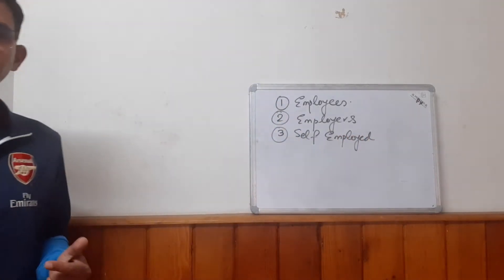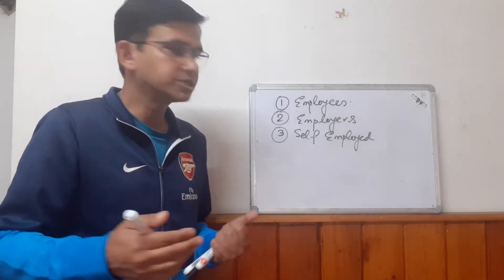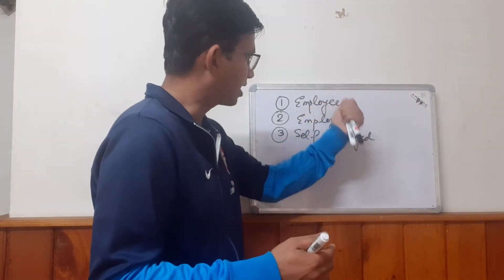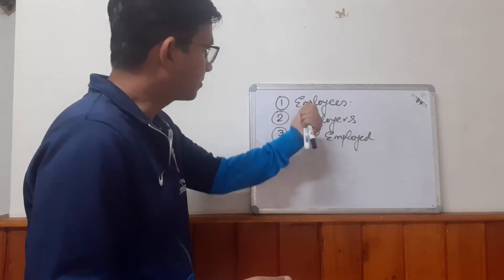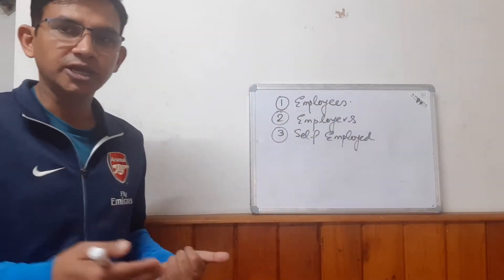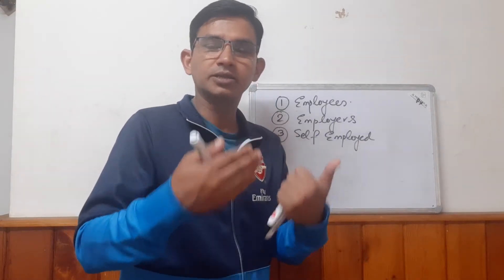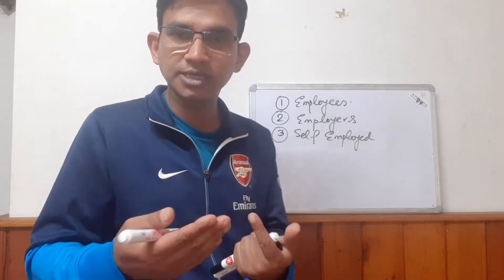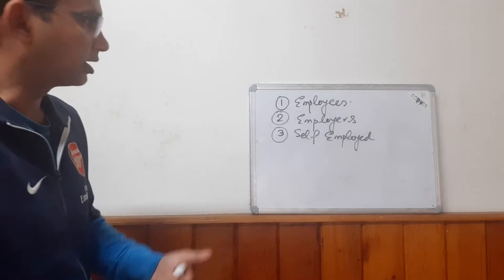When calculating or estimating national income, we identify all the employees and employers. Employees have only labor, and employers have land, capital, and organization. Self-employed people are the owner of land, capital, and organization, and they themselves are also the labor. I will give an example later.